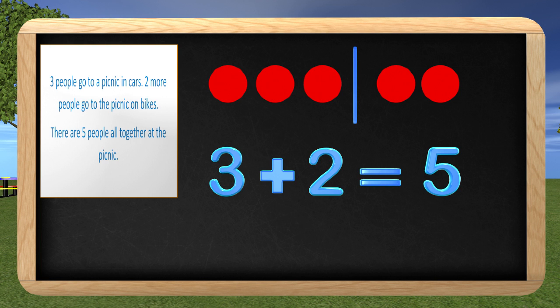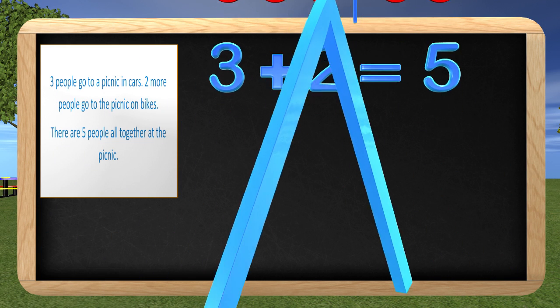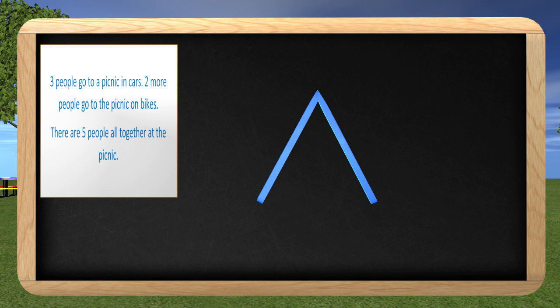I wonder if there is another way I can illustrate or show this problem. I know. What if we did a math mountain? Here is a math mountain, and if you remember, the total always goes on top of the mountain. What is the total amount of people who went to the picnic? Five. Great job, guys!